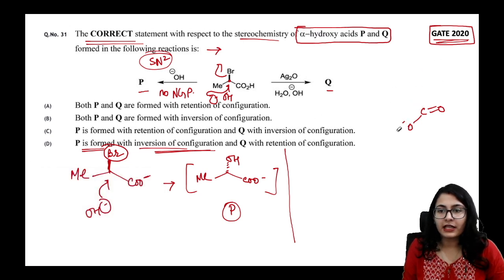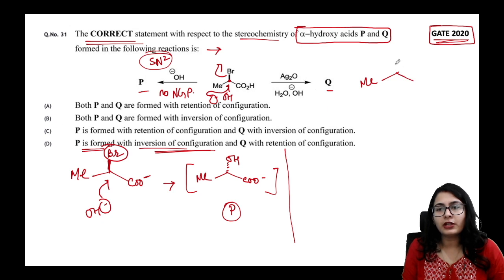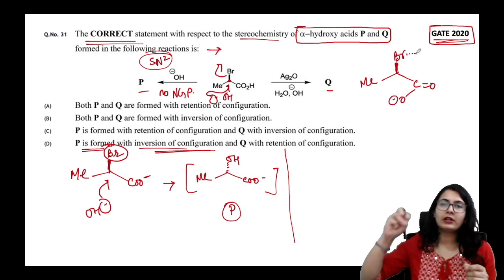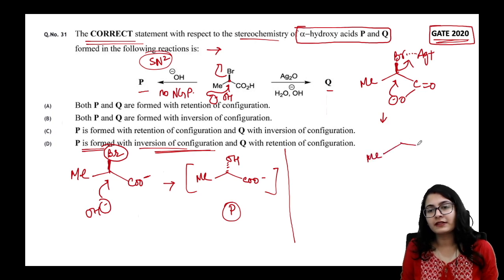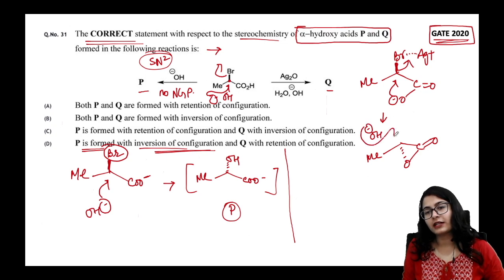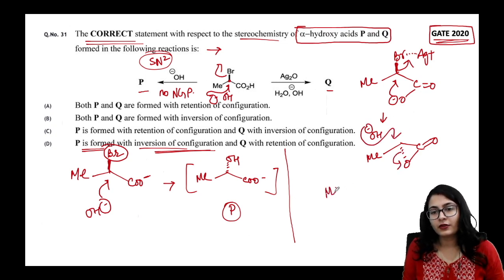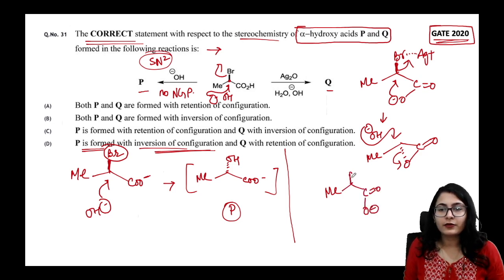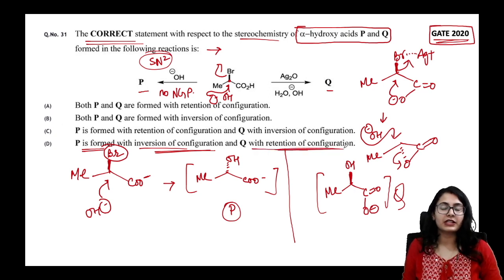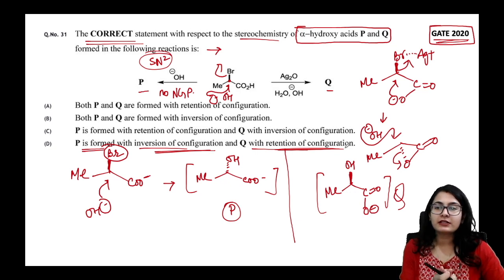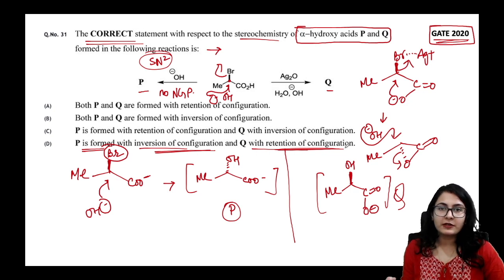In the second case, a silver salt is present. Ag⁺ pulls away the bromide — that is the driving force for NGP by the carboxylate oxygen. The oxygen attacks from below the plane, forming a cyclic intermediate. When OH⁻ then attacks, the product Q is formed with retention of configuration.